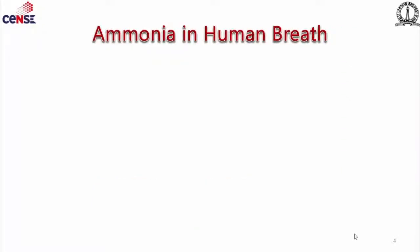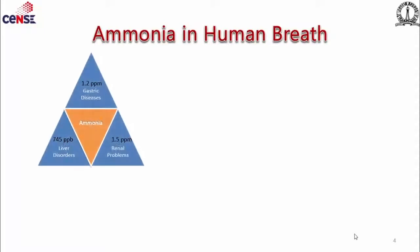Now let's come to the origin of ammonia. Why ammonia? It's a disease triangle — you can see how ammonia is associated with three different diseases: gastric diseases, liver diseases, and renal problems.